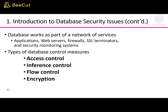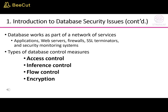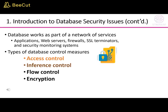A database works as part of a network of services such as applications, web servers, firewalls, SSL terminators, and security monitoring systems. There are four types of database control measures: access control, inference control, flow control, and encryption.